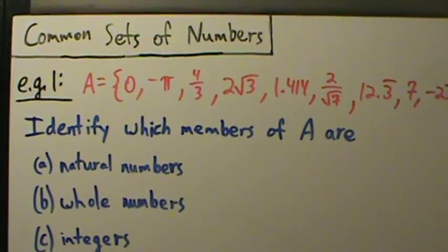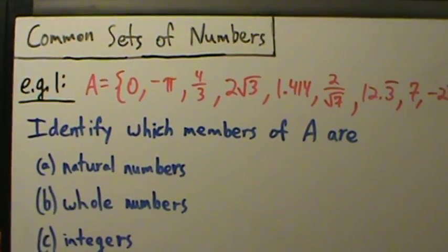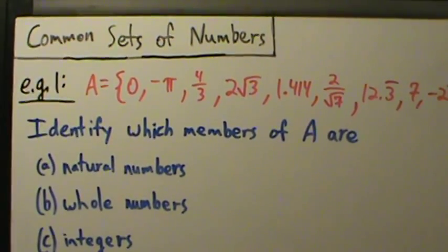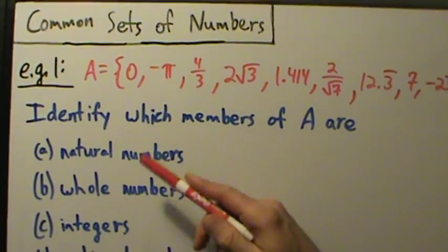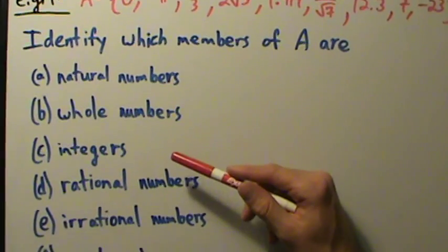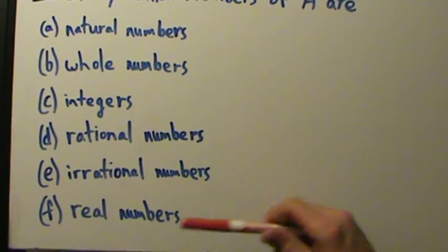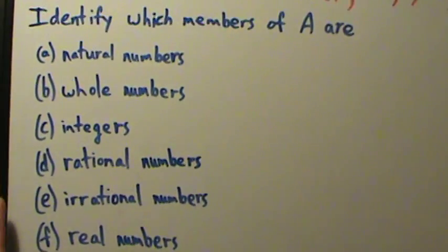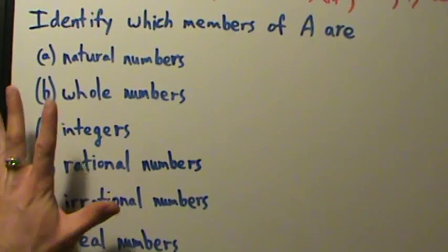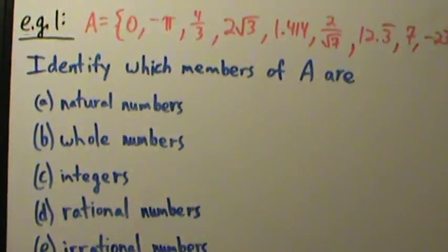Here's an example of identifying types of numbers. So in the previous video, we talked a lot about the common sets of numbers, which were natural numbers, whole numbers, integers, rational numbers, irrational numbers, and real numbers. So now we're going to practice with an example identifying all these different types.